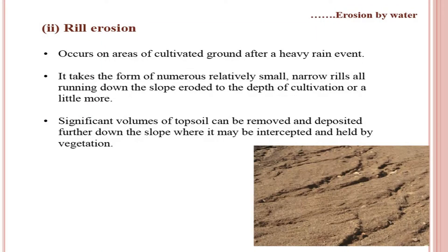Rill erosion is the advanced stage of sheet erosion. It occurs on cultivated ground after a heavy rain event, taking the form of numerous small, narrow channels or rills running down the slope, eroded to the depth of cultivation. Significant volumes of topsoil can be removed and deposited further down the slope where it may be intercepted by vegetation.